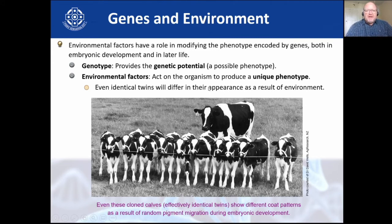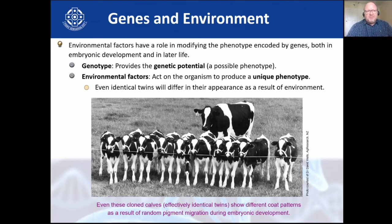Before Darwin, there was a belief that if your dad stretched his neck every day, you'd be born with a longer neck — like saying if Arnold Schwarzenegger did a lot of bodybuilding and had a child, that child would come out a bodybuilder. That is obviously not how it works. Our genotype provides the genetic potential — the possible phenotype — and the environment shapes it.